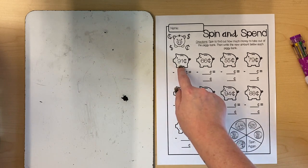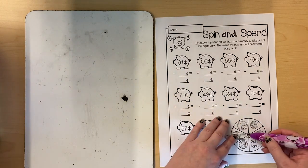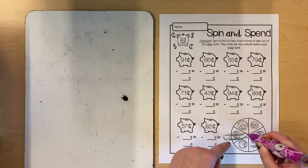So this piggy bank starts with 91 cents. I'm gonna put a paper clip on my spinner and hold it in place with my pencil. Then I'll spin it.